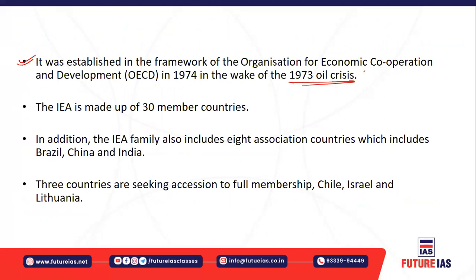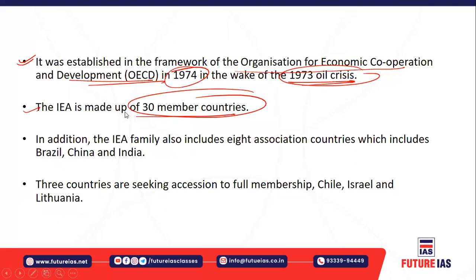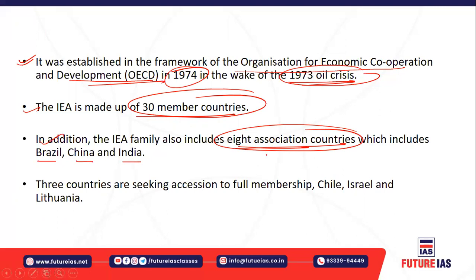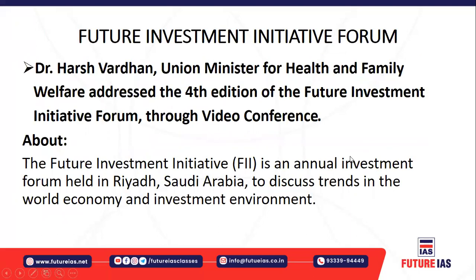The IEA was set up in 1974 against the background of the 1973 oil crisis, under the framework of the Organisation for Economic Cooperation and Development (OECD). It currently has 30 member countries and 8 association countries, which include Brazil, China, and India. India is an associated country without full membership, and along with Brazil and China, is seeking accession to full membership of the IEA.